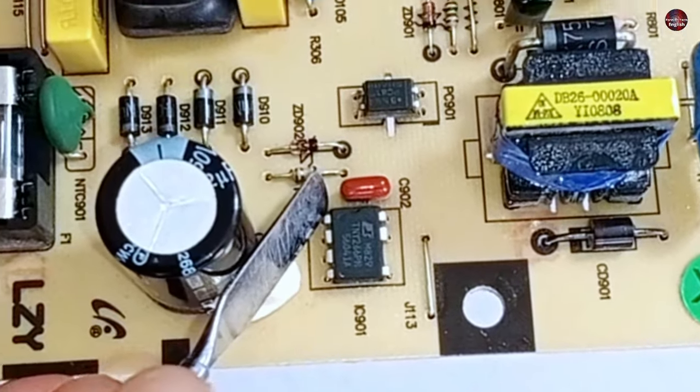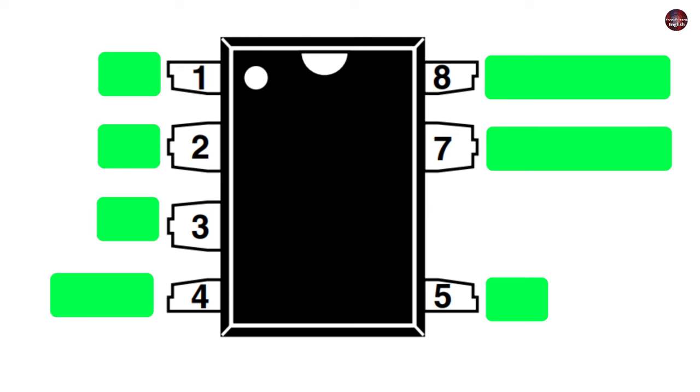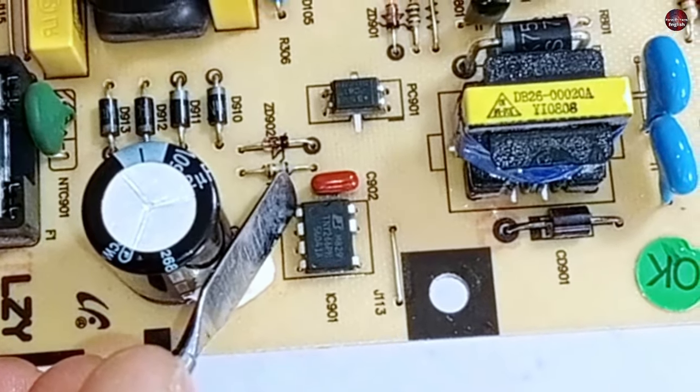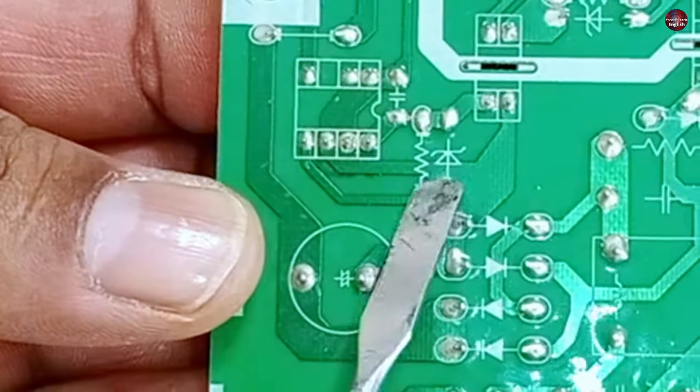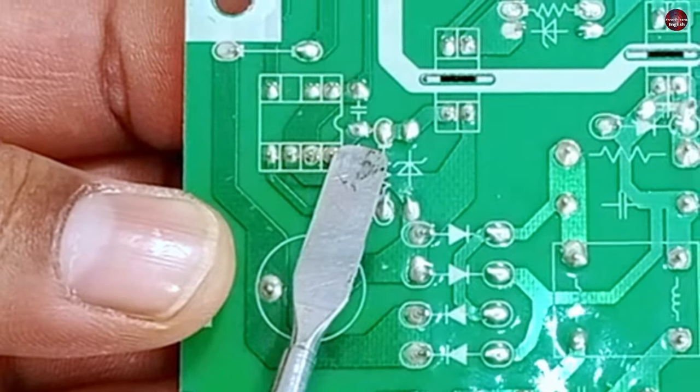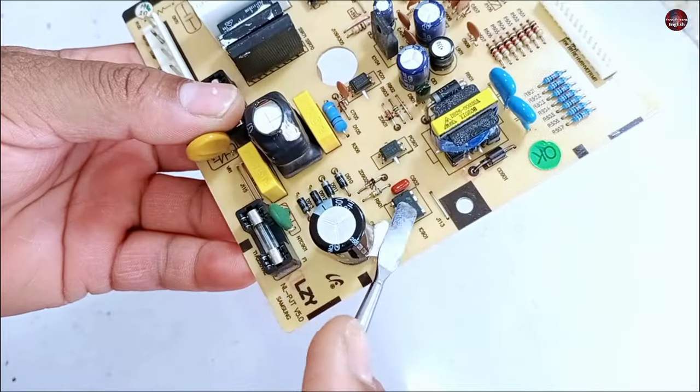This is the first number pin of this IC, and the name of this pin is BP. This is the bypass pin. A capacitor will be attached to this pin, which will be attached to the negative side of the capacitor. Then, this IC will function. The capacitor is a must.